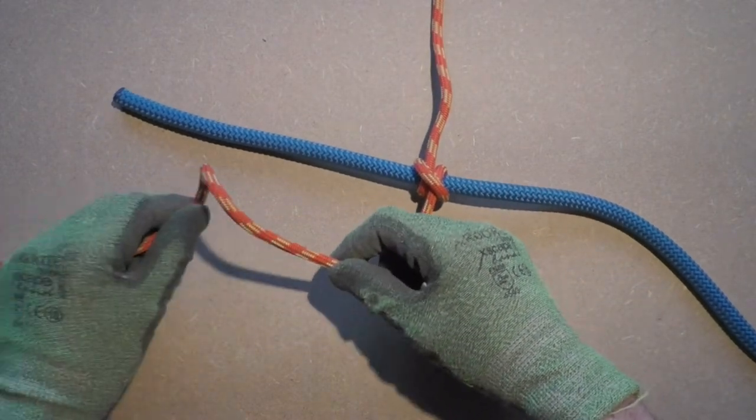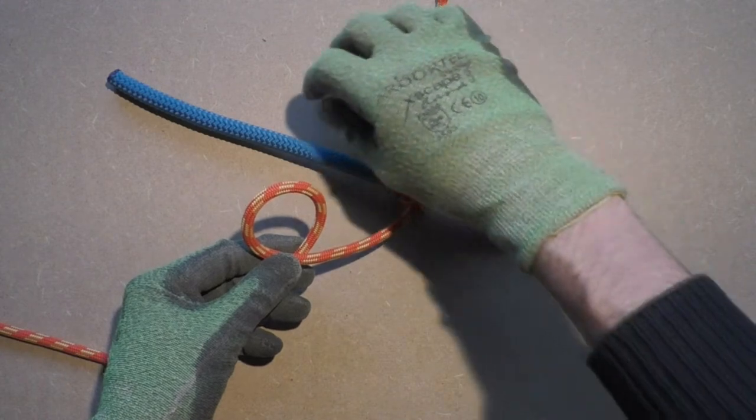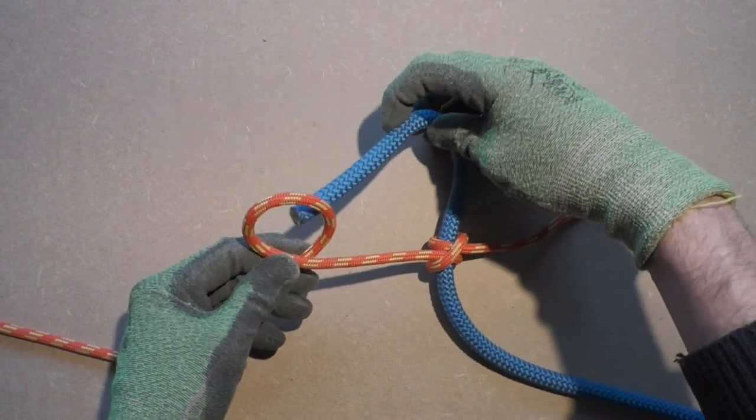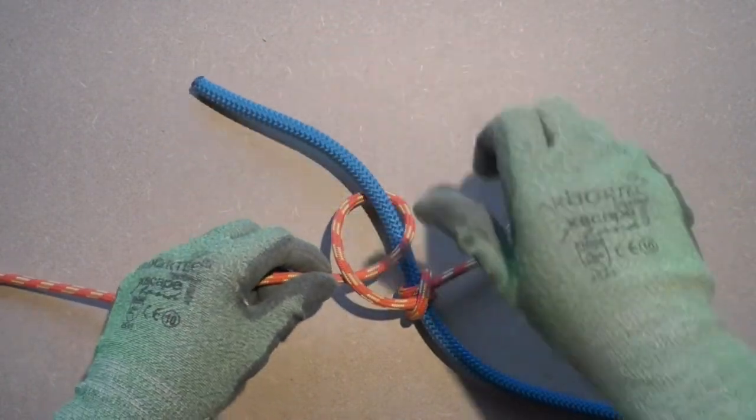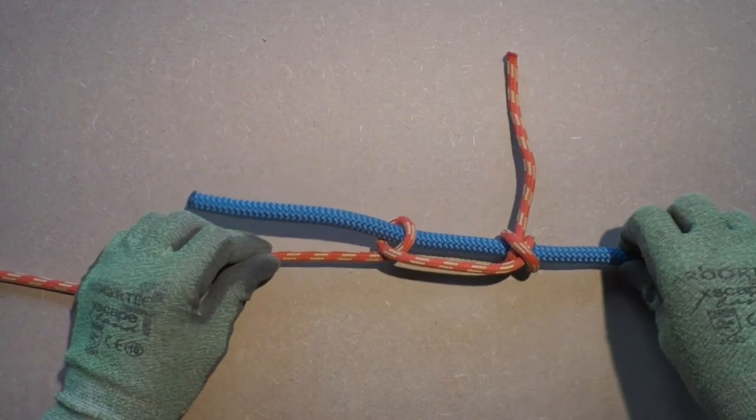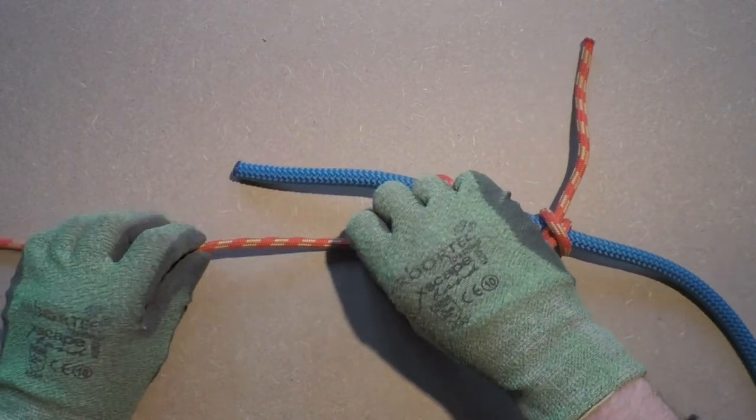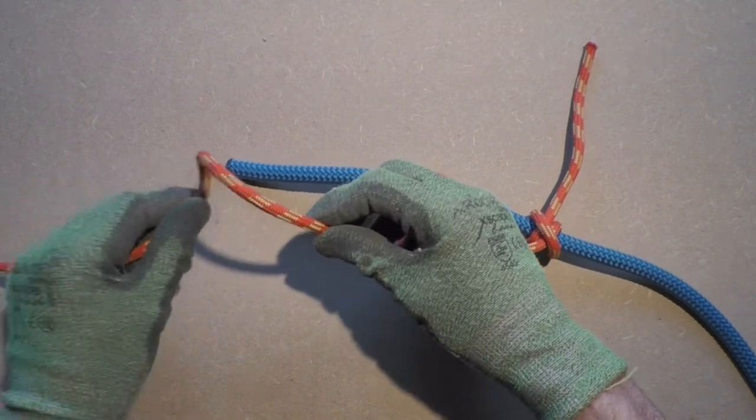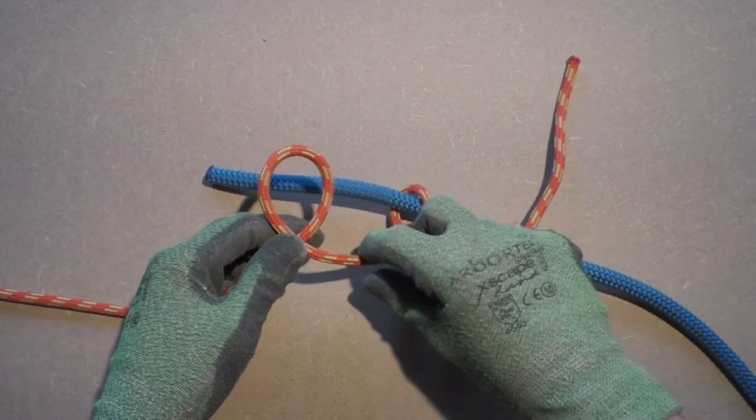Now that we have a tail of climbing line sticking out to prevent it from getting hung up on all kinds of obstacles we will add a few half hitches to keep it in line with the climbing line so we end up with a more streamlined knot. Usually two or three half hitches will do the job.